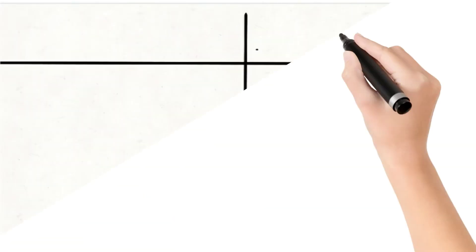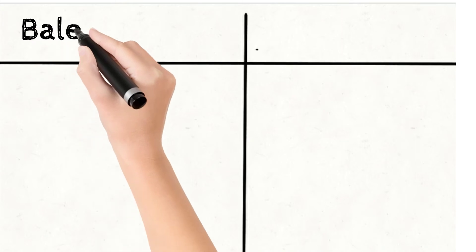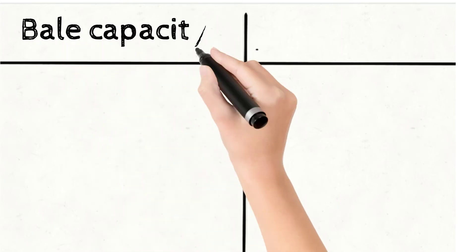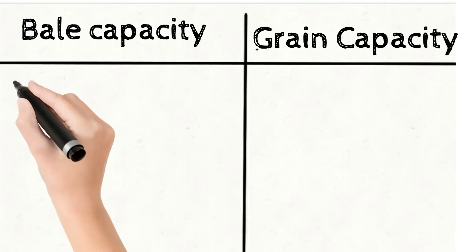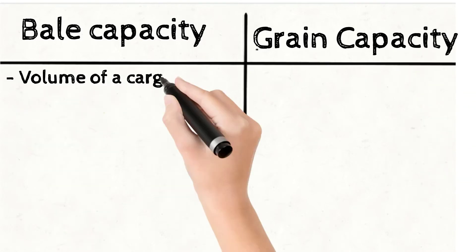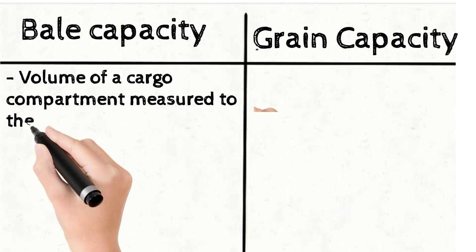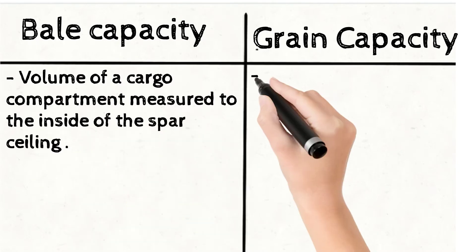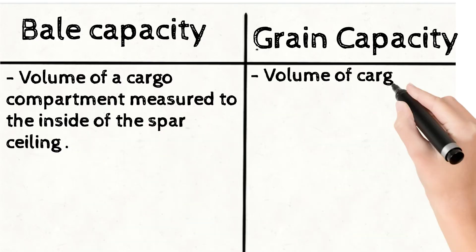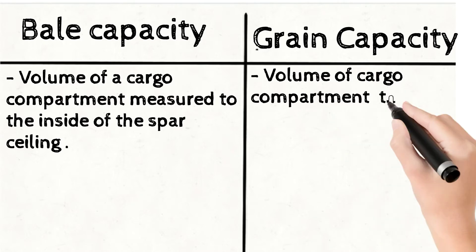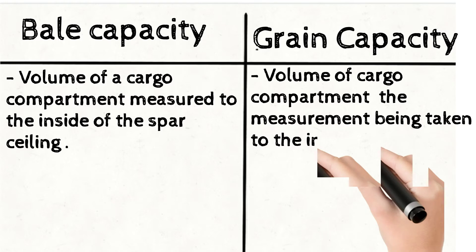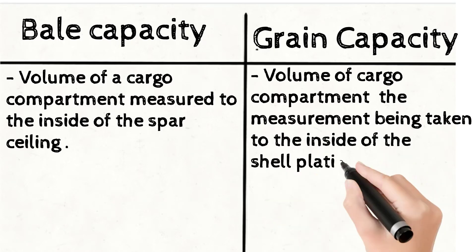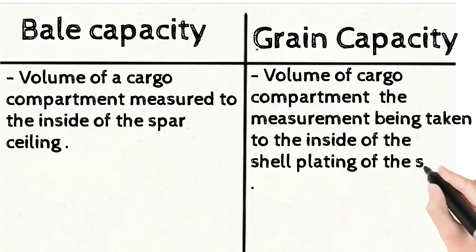Hello and welcome. This is video number 8014 and in this video I will talk about bale capacity and grain capacity. The bale capacity is the volume of a cargo compartment measured to the inside of the spar ceiling. Grain capacity is the volume of the cargo compartment measured to the inside of the cell plating — that is, from extreme end to extreme end of the hold.